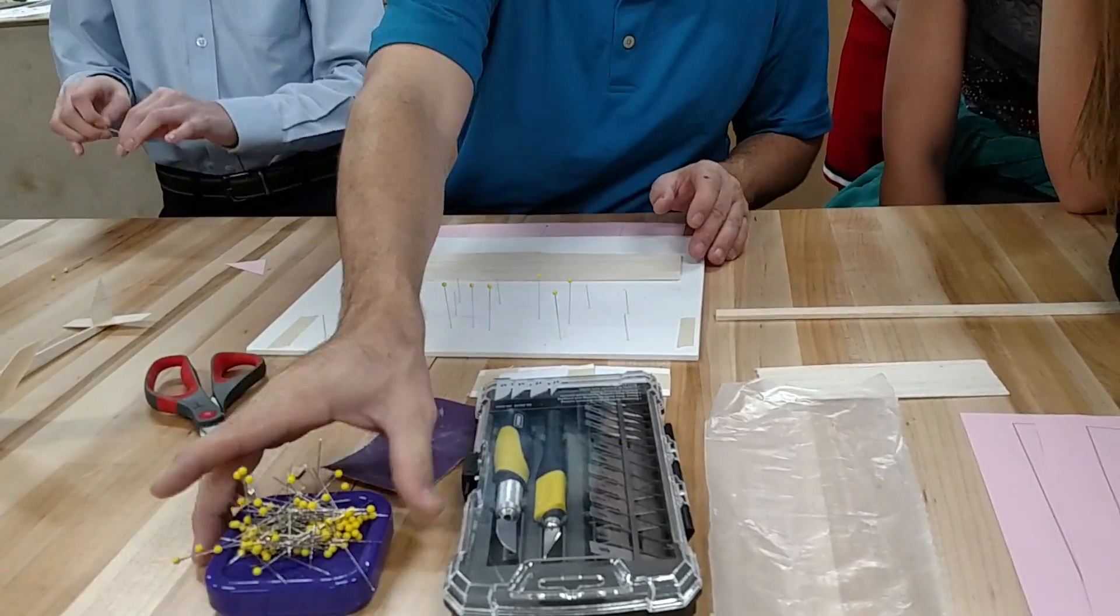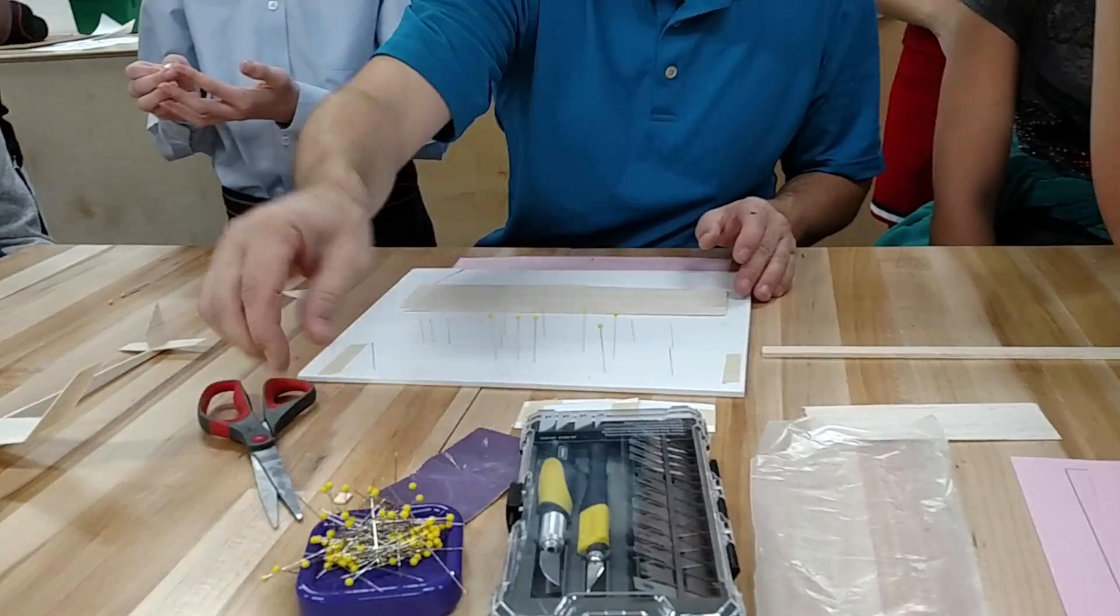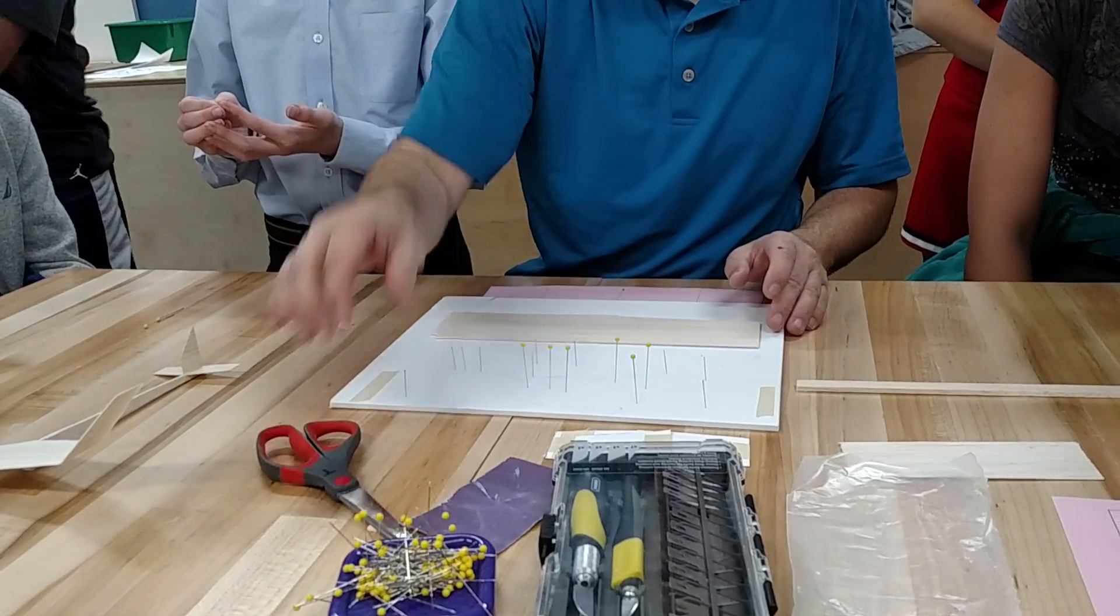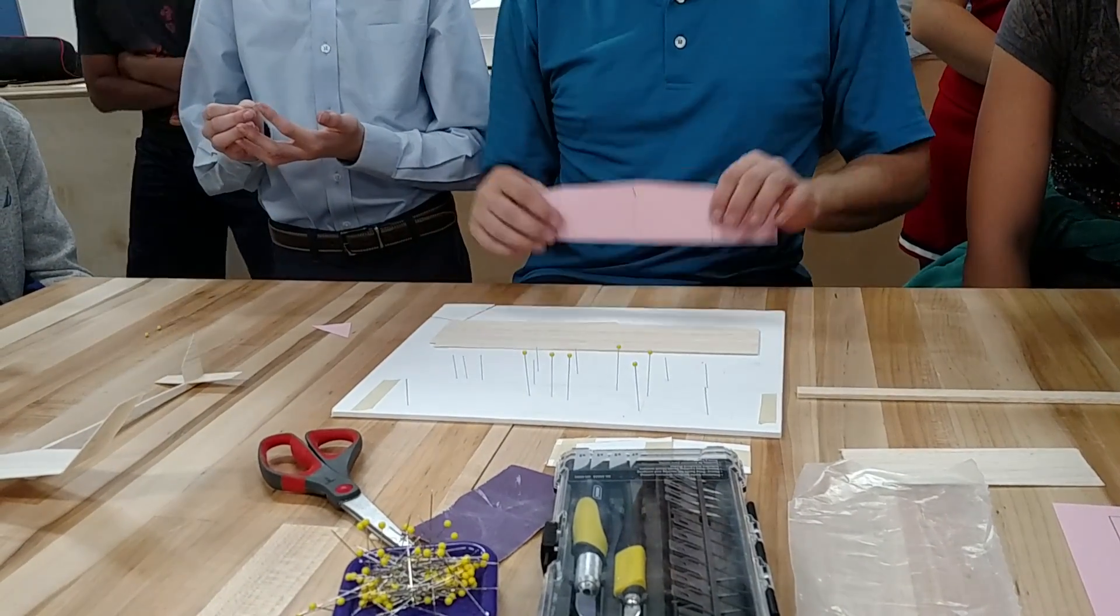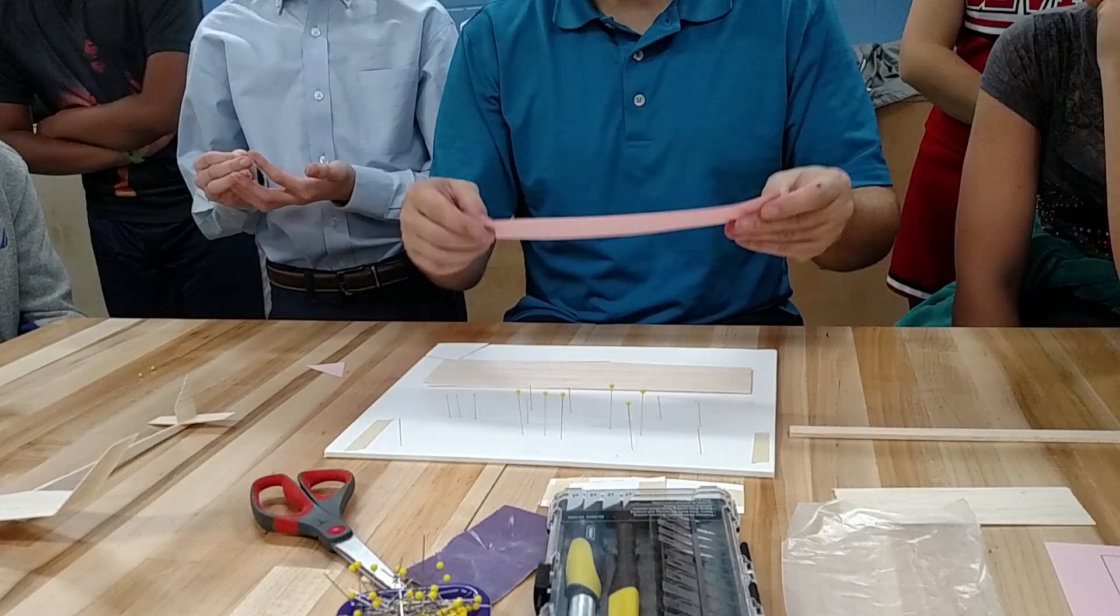You're going to need your hobby knife and some of these pins. You should have already cut all of your pieces out, so I'm going to take this one pattern. This is for our wings.